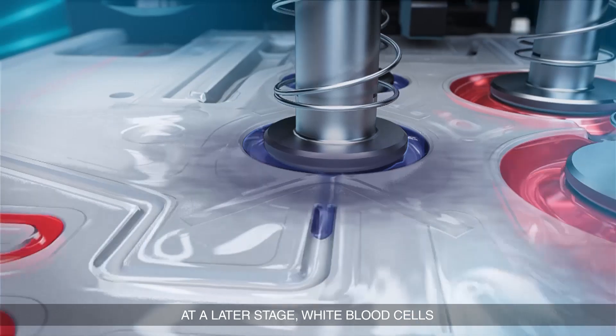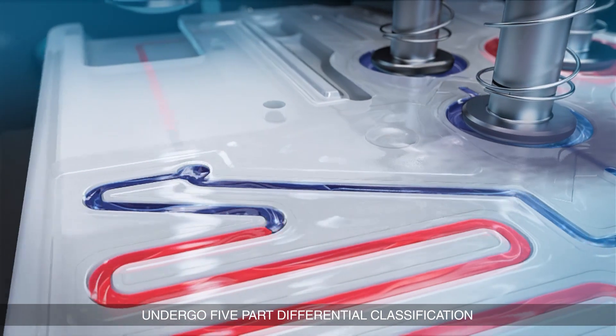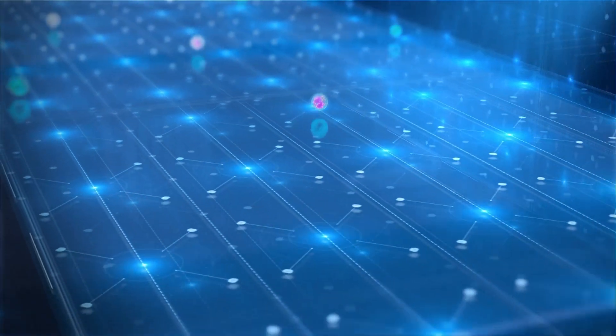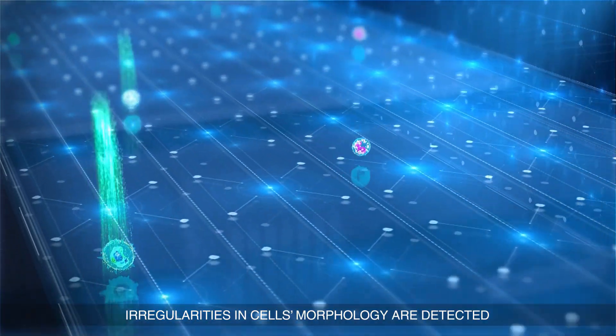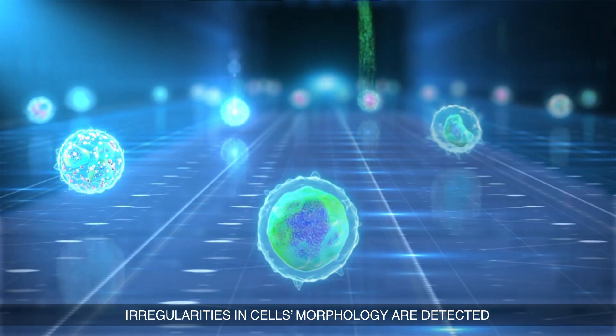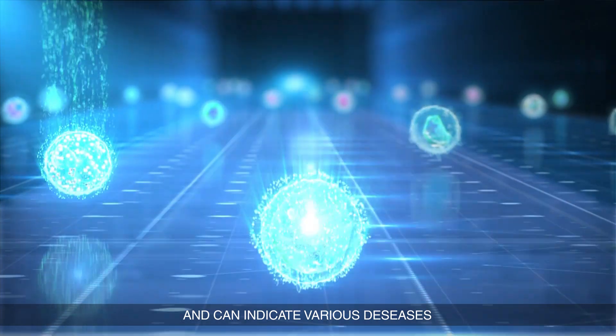At a later stage white blood cells undergo five-part differential classification. Irregularities in cell morphology are detected and can indicate various diseases.